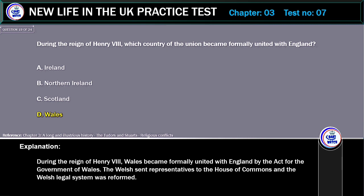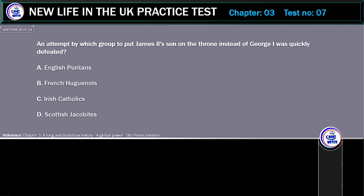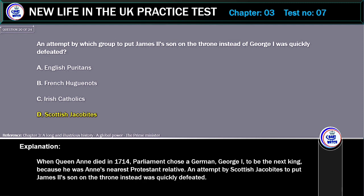An attempt by which group to put James II's son on the throne instead of George I was quickly defeated? A. English Puritans. B. French Huguenots. C. Irish Catholics. D. Scottish Jacobites. Correct answer: Scottish Jacobites. Explanation: When Queen Anne died in 1714, Parliament chose a German, George I, to be the next king, because he was Anne's nearest Protestant relative. An attempt by Scottish Jacobites to put James II's son on the throne instead was quickly defeated.